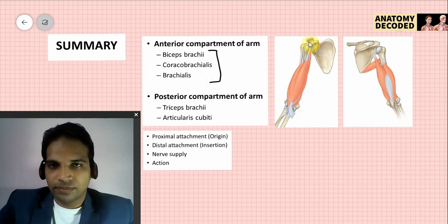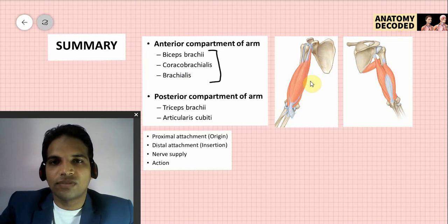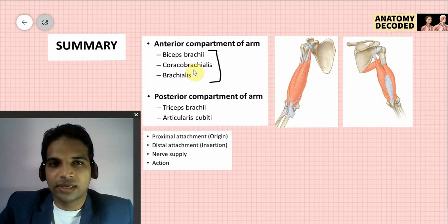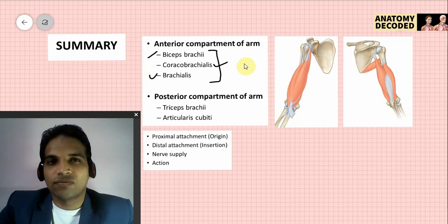Coracobrachialis arises from the tip of the coracoid process; distal attachment is on the medial border of the humerus. Brachialis arises from the anterior aspect of the shaft of the humerus — the lower half, anterior border, anteromedial surface, and anterolateral surface entirely. Distal attachment of brachialis is on the anterior aspect of the coronoid process of the ulna, the region referred to as the ulnar tuberosity. Biceps brachii and brachialis are both responsible for flexion of the elbow joint; biceps additionally causes supination of the forearm, and coracobrachialis causes adduction of the shoulder joint.